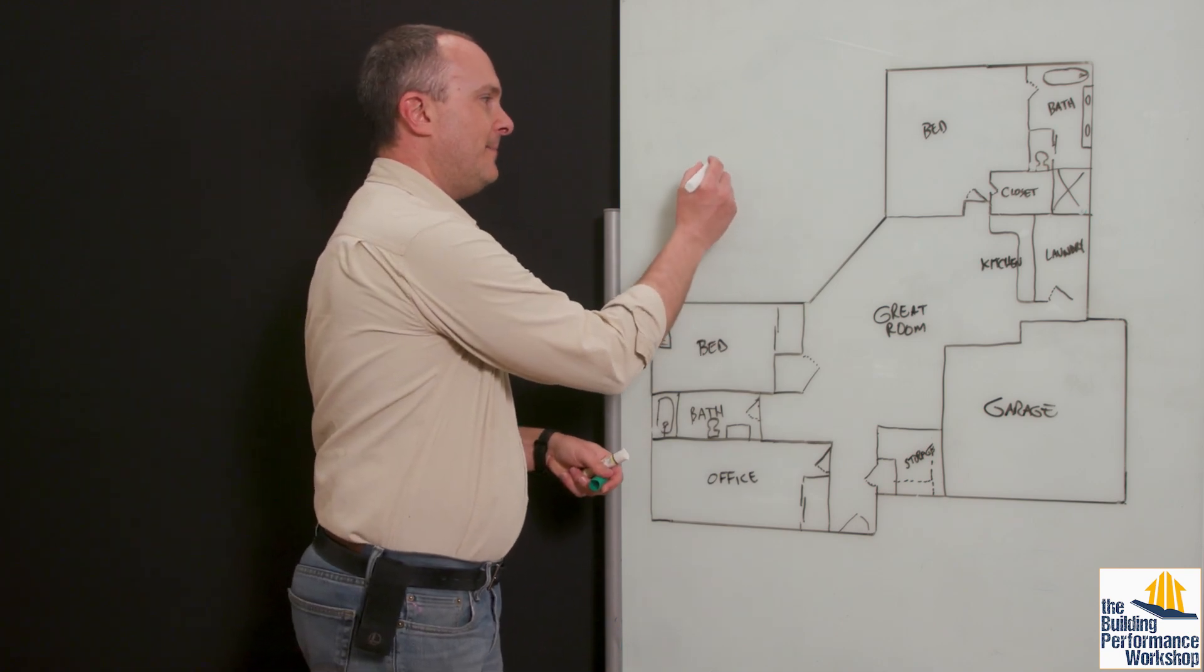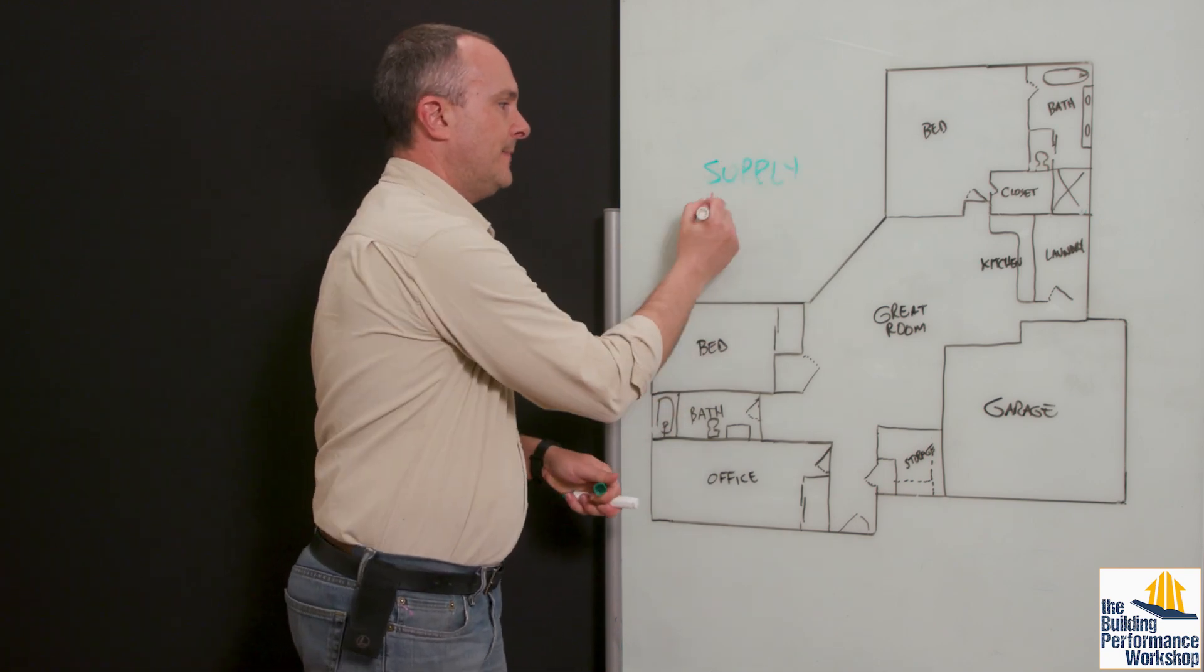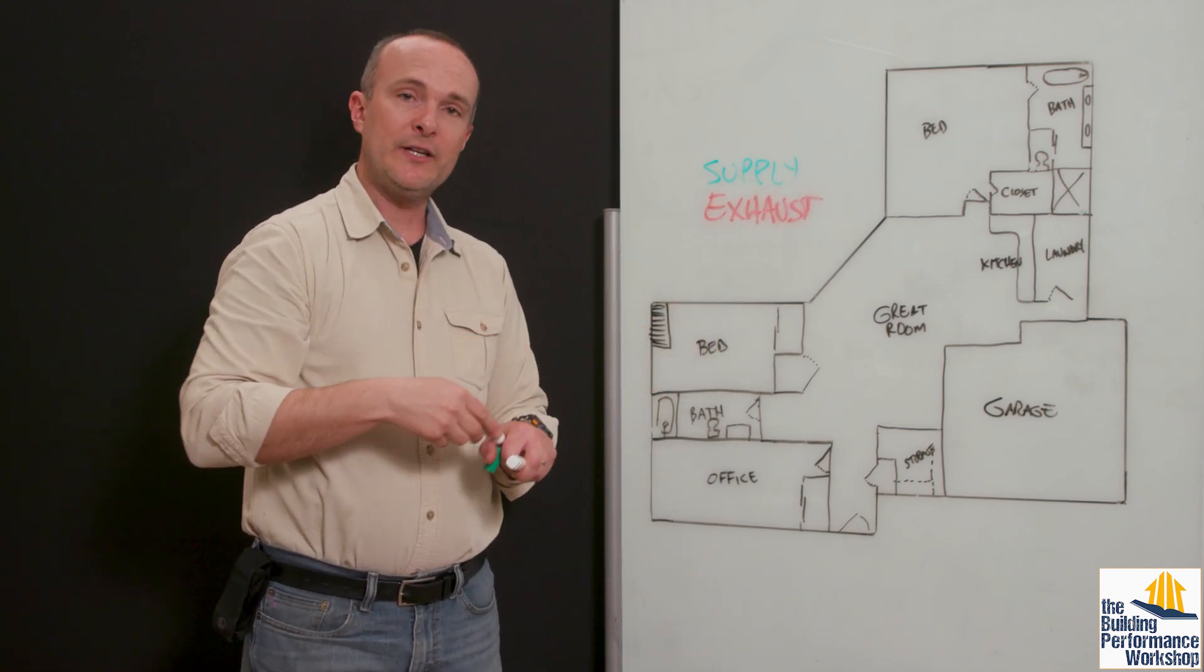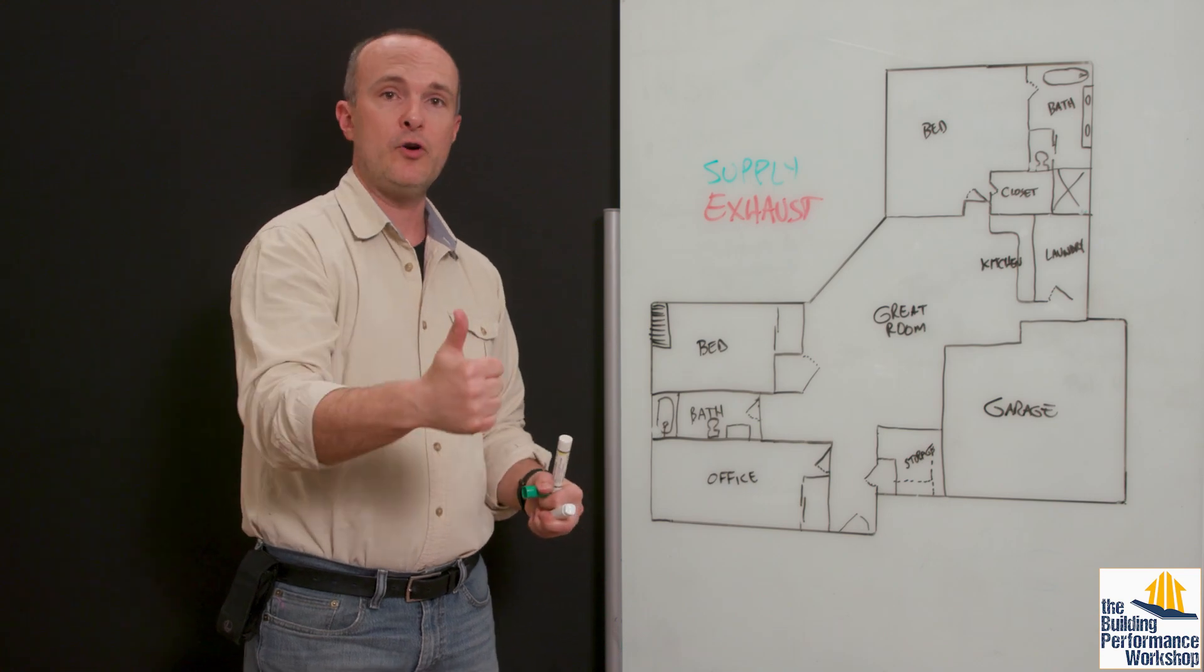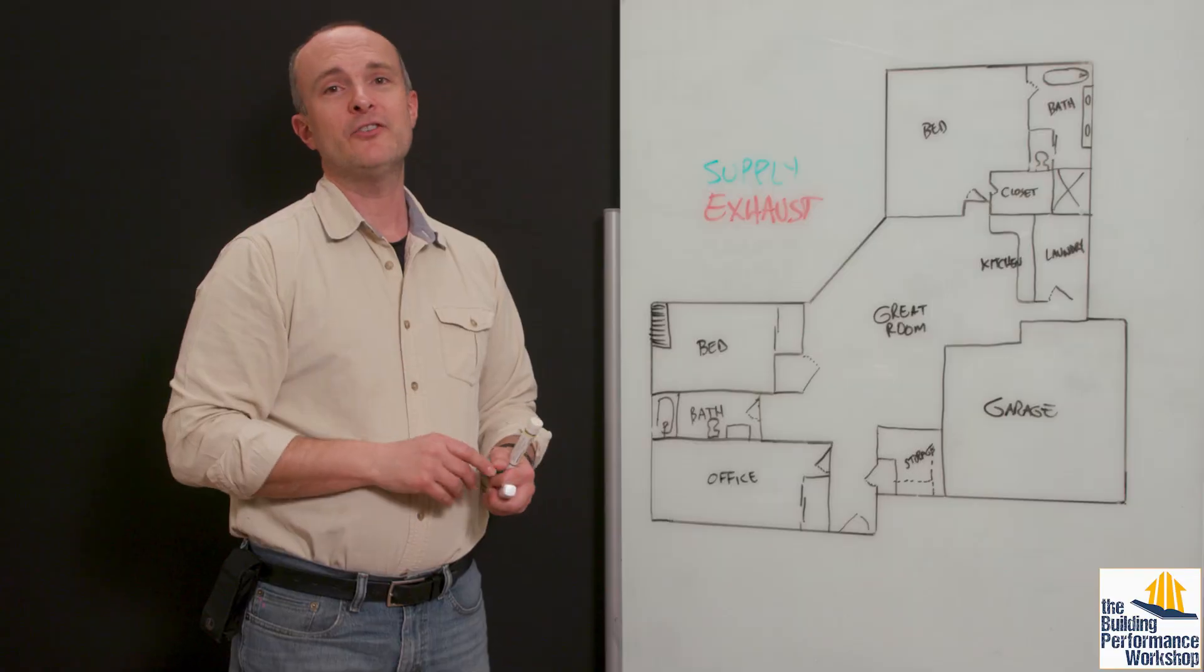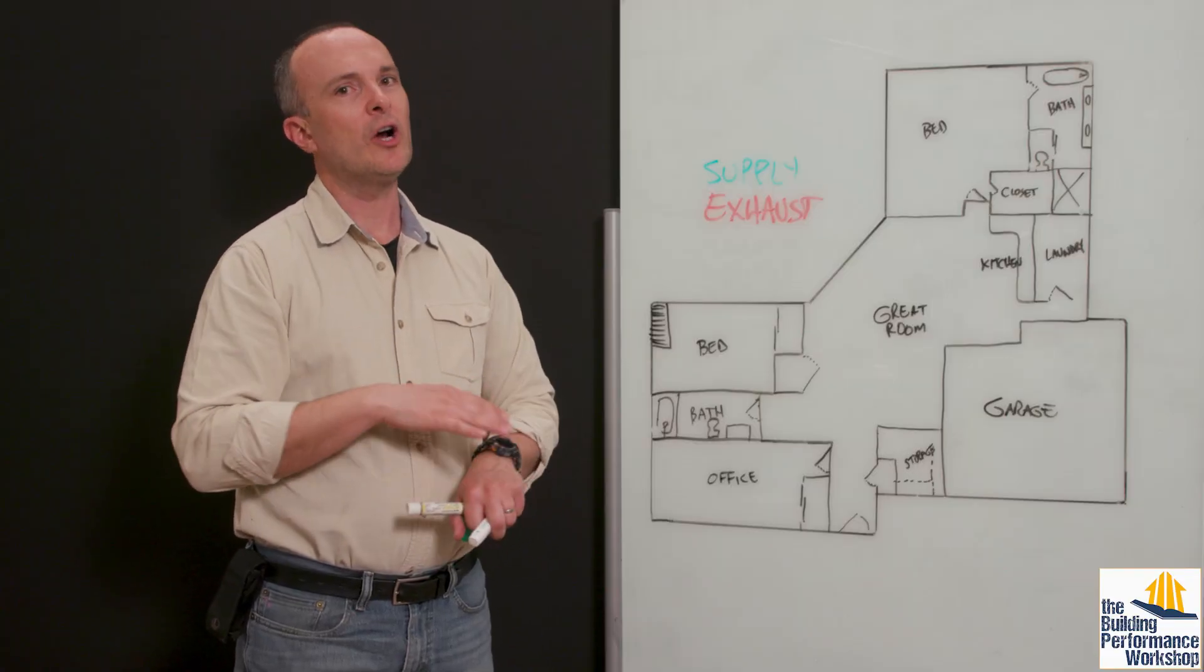And the beautiful thing about something like an ERV, which you can see on this channel, ERVs from Broan, from Renew Air. Of course, if you're familiar with Matt Risinger's channel, you've seen Zehnder, which is a Ferrari kind of a model.